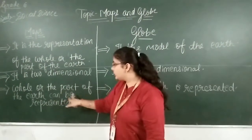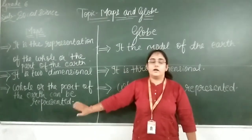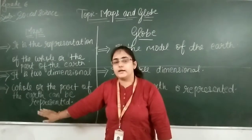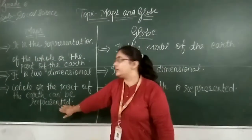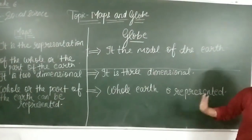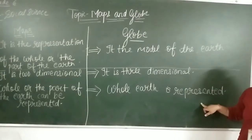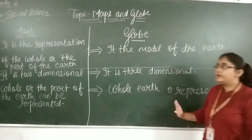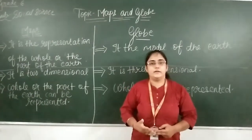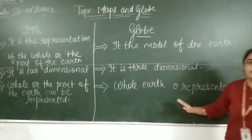The whole or part of the earth can be represented on a map — either the entire earth or just a portion. You can see the entire part of the earth at the same time on a globe. Another difference is that a map is easy to carry anywhere, but you cannot carry a globe anywhere.